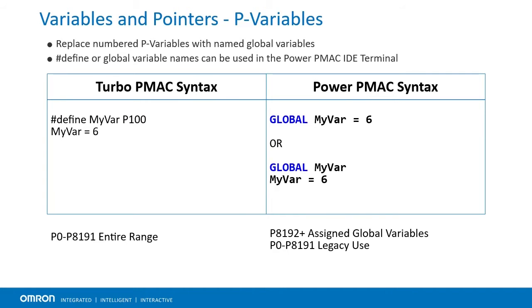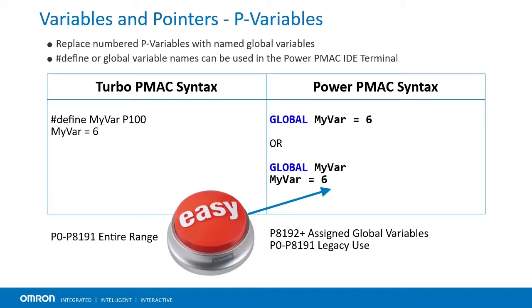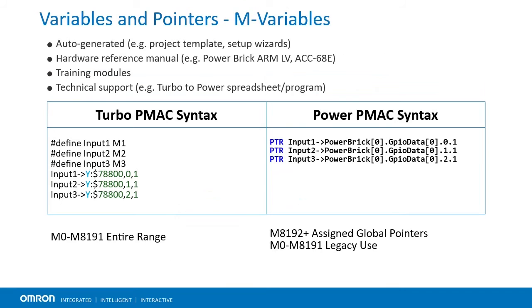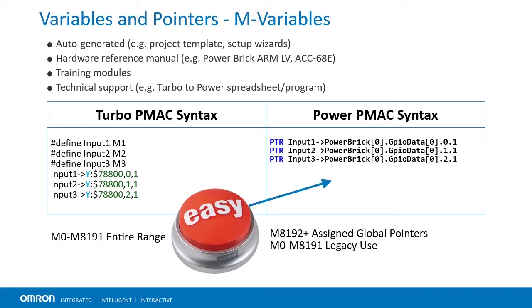Next, we'll take a look at some of the programming differences between Turbo and Power PMAC. In Turbo PMAC, numbered p-variables were used as global variables. If a name was desired to make programs more readable, it was added with the pound define. While the same p-variables and pound defines will work in Power PMAC, it is preferable to declare global variables. These are assigned to p-variables starting at p8192, leaving p0 to p8191 for legacy use. Similarly, numbered m-variables were used for pointers to hardware locations. In Power PMAC, there will usually be a name structure so there is no need to point to a numerical address. It is preferable to declare global pointers, assigned to m-variables starting at m8192, leaving m0 to m8191 for legacy use.